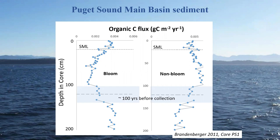Looking above the top of that blue band representing a hundred years and going up towards the surface, it appears that at the south end of Puget Sound, the bloom-type organic matter was increasing over the last hundred years and the non-bloom type was decreasing — opposite to the hypothesis being tested. But looking at the sediment core as a whole, values earlier at the bottom of the record are very similar to what they are at the top, suggesting some change over the last 150 years or so that went in opposite directions in bloom and non-bloom and then back.